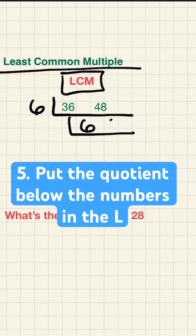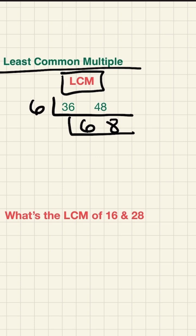36 divided by 6 is 6. 48 divided by 6 is 8. Think of another common factor of 6 and 8.